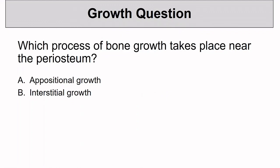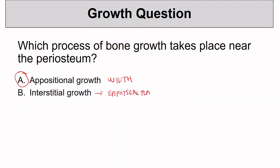Our second question: which process of bone growth takes place near the periosteum? The periosteum is at the bone surface, and this type of growth can happen in response to the pull of skeletal muscles. This is called appositional growth — growth in width. Interstitial growth takes place at the epiphyseal plates and results in growth in length.